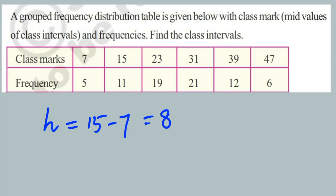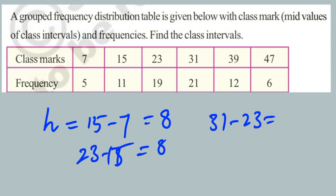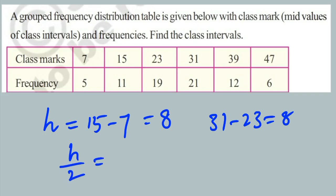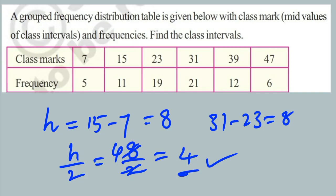Not only 15 minus 7 — you can also take 23 minus 15, which gives 8, or 31 minus 23, which also gives 8. So the difference between any two successive class marks is always equal to 8. After finding the difference, divide by 2: h by 2 equals 8 by 2, which equals 4.